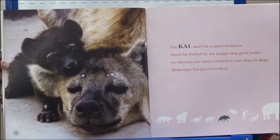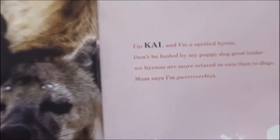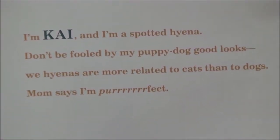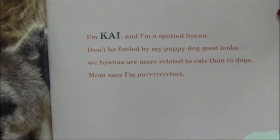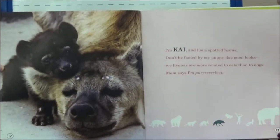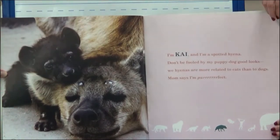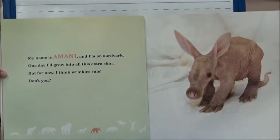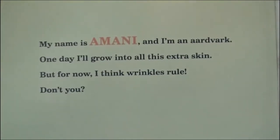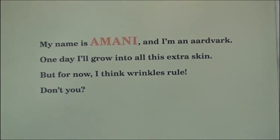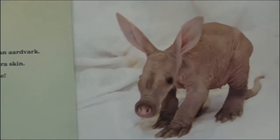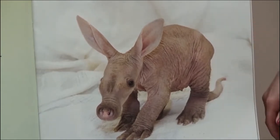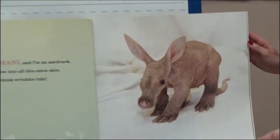I'm Kai, and I'm a spotted hyena. Don't be fooled by my puppy dog good looks — we hyenas are more related to cats than to dogs. Mom says I'm purrfect. The spots on the hyena are a detail that tells us they are a spotted hyena. My name is Amani, I'm an aardvark. One day I'll grow into all this extra skin, but for now I think wrinkles rule. The wrinkles are the skin on the aardvark — don't you think this is an unusual, very strange animal?